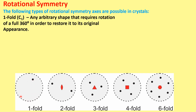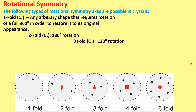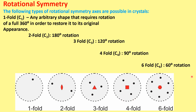1-fold means we rotate by 360 degrees to restore the original appearance — this applies to an arbitrary shape. In 2-fold symmetry, rotating by 180 degrees gives the same structure. In 3-fold, rotating by 120 degrees gives 3-fold symmetry. In 4-fold, 90 degrees, and in 6-fold, 60 degrees. Rotational symmetry is denoted by Cn or simply n, so 1-fold is C1, and 2-fold is C2.